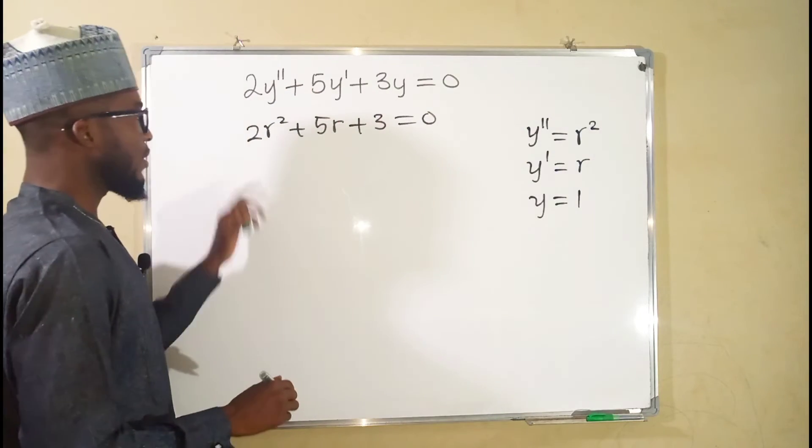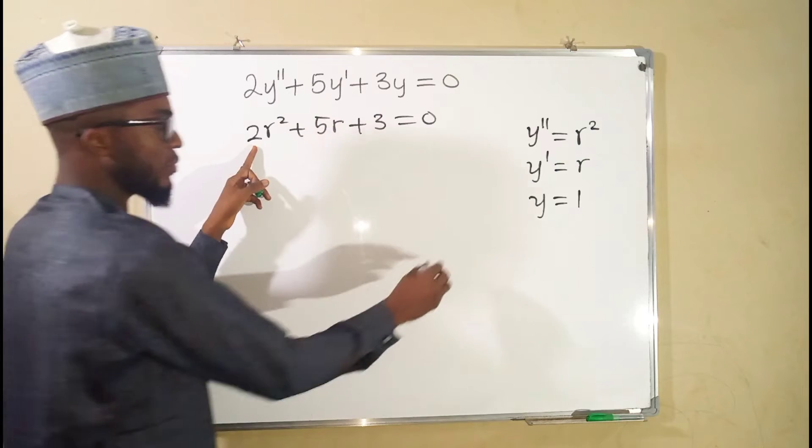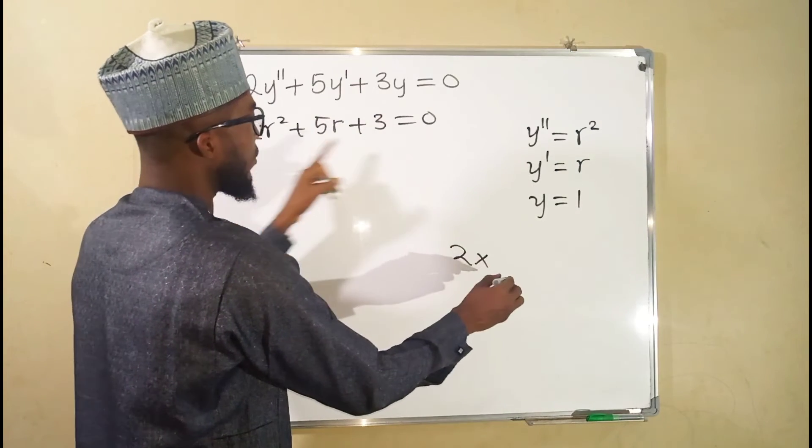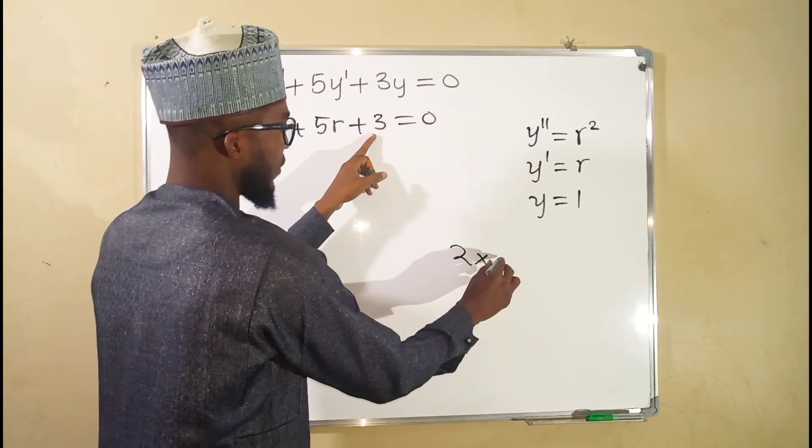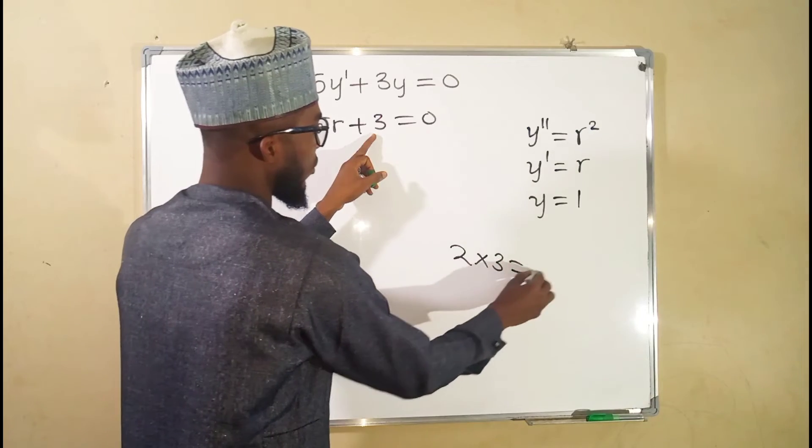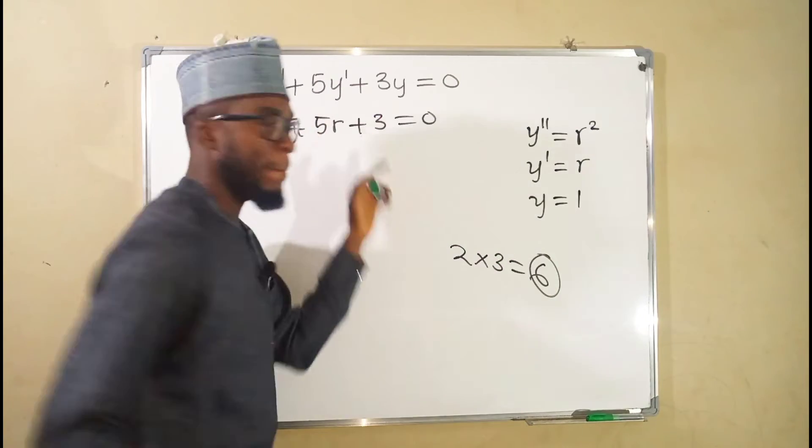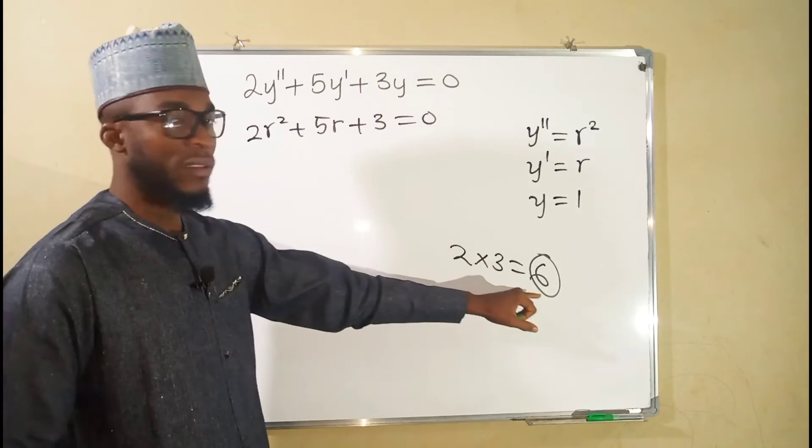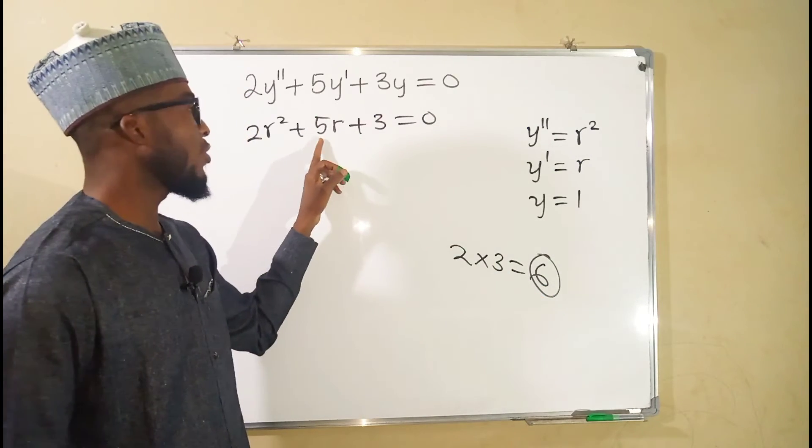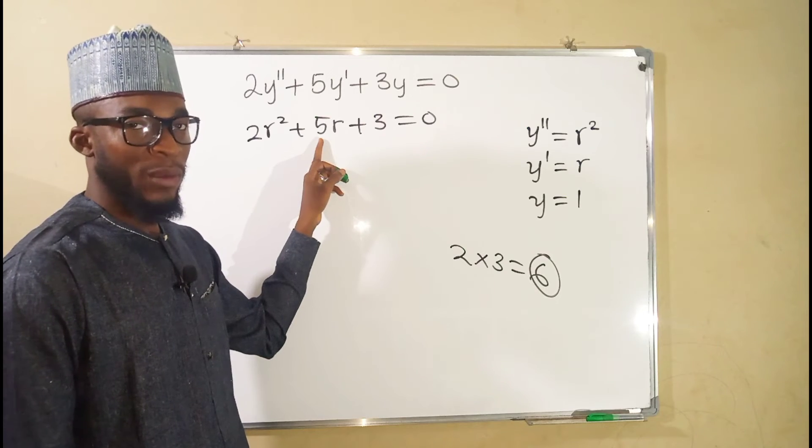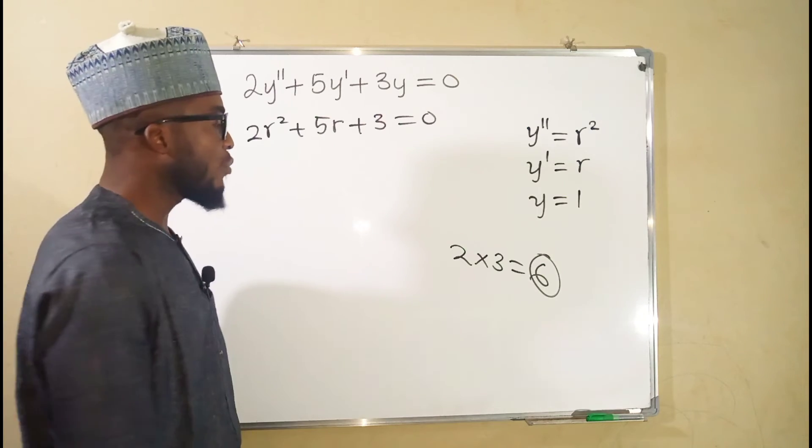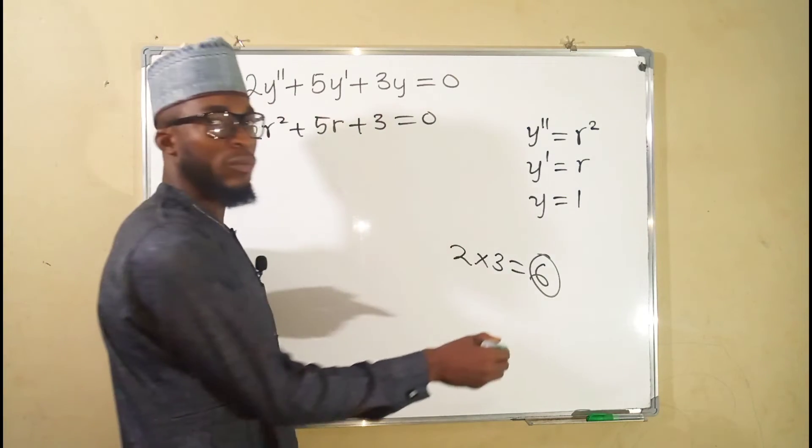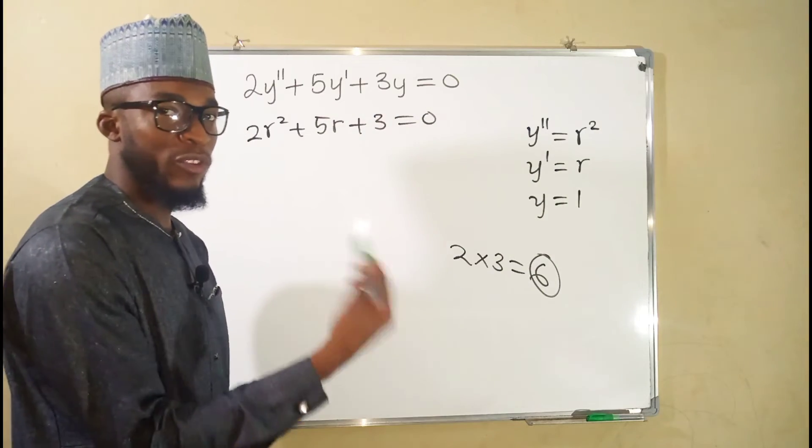So by factorization, the leading coefficient here is 2, we multiply it with the constant, we have 3, and this is equal to 6. We are going to think of two numbers, which when we multiply them together, we get 6, and when we add them together, we are going to get the coefficient of the middle term, which is 5. So the numbers are 3 and 2. 3 times 2 is 6, 3 plus 2 is 5.